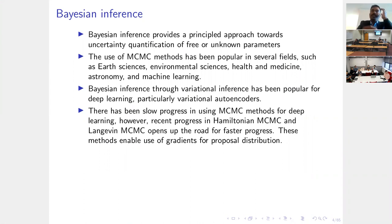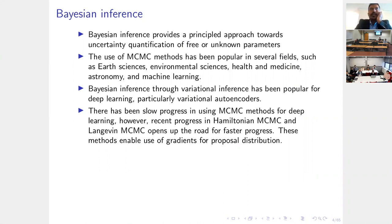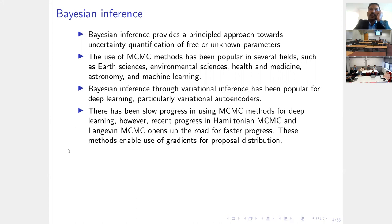MCMC methods have been popular in other fields — earth science, environmental sciences, health and medicine, astronomy, and of course machine learning. Bayesian inference is also implemented not just by MCMC but also by variational inference methods, which have been popular in deep learning, particularly in variational autoencoders. There has been slow progress in the use of MCMC methods, but recent progress in Hamiltonian MCMC and Langevin MCMC opens the road for future progress. These methods use gradients, and Langevin MCMC is the focus of today's seminar.